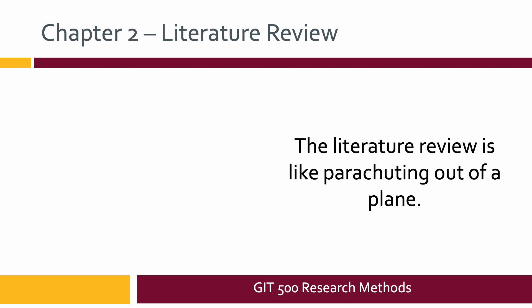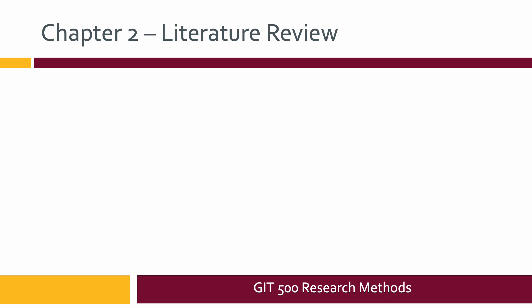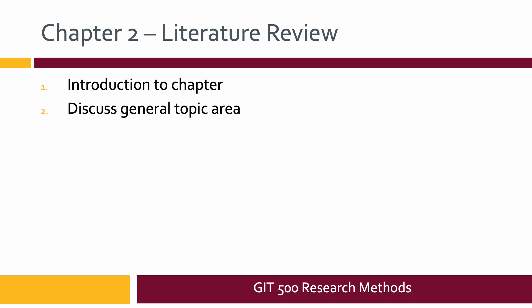The literature review is like parachuting out of a plane — that's the best way to describe how to write one. You'll write an introduction saying you're going to look at sources that give background on the topic area. You can also talk about the importance of literature reviews to studies. Then you start your adventure of jumping out of the plane. When you jump, you can see a big X on the ground — a landing spot way down there.